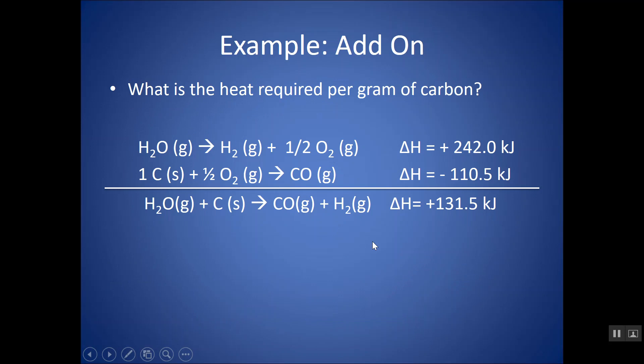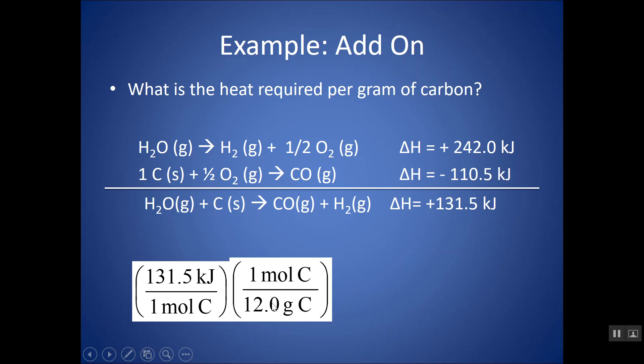Take a moment, try this add-on to the same example. So here's my delta H again. This is kilojoules. And, notice that it's per every 1 mole of CO. If there was a coefficient of 2, it would be for 2 moles. For 1 mole of CO, if there was a coefficient of 2 in front, there would be a 2 on the bottom. So, I'm looking at the coefficient to see per how many moles. But, I want the heat required per gram, so I can just change moles into grams. And now I have kilojoules per gram of carbon. Still positive because delta H here is endothermic.